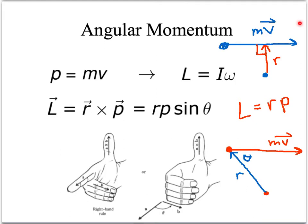So in the case up here, we would put our fingers in the direction of R, so they'd be pointing up. And then we'd swing them to the direction of our momentum, which is pointing to the right. So our angular momentum is going to point into the page at that point.